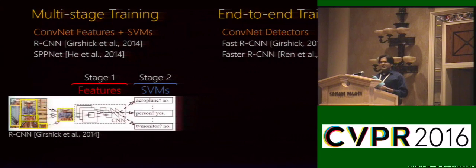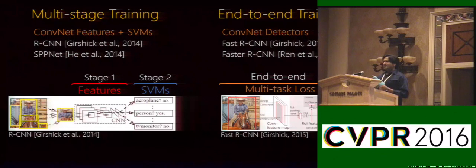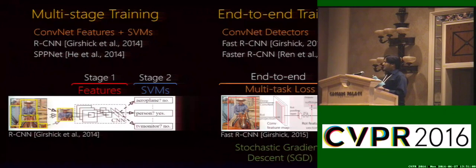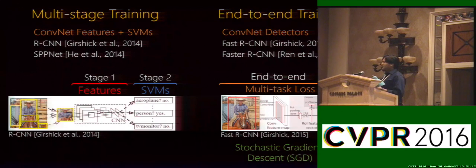We moved from systems like RCNN, which use hard mining to train SVMs, to systems like Fast-RCNN, which are trained using Stochastic Gradient Descent or SGD. And unlike SVMs, it's not trivial to incorporate hard mining in an SGD framework, and that's why it has not been used.